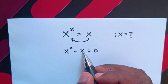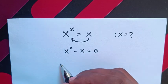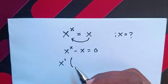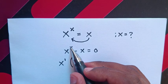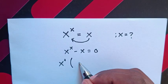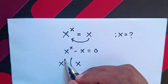Now here x is common, so we take x^1 out of bracket. Then x^x divided by x^1 will be x^(x-1).